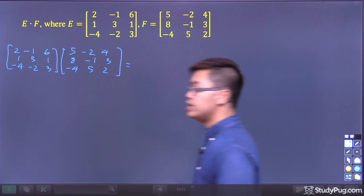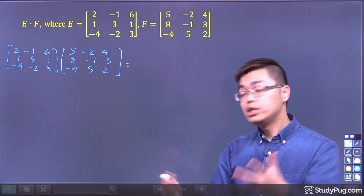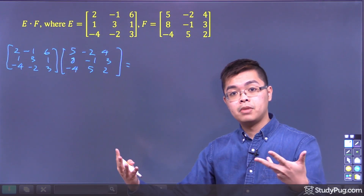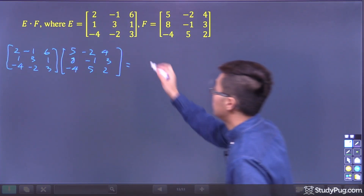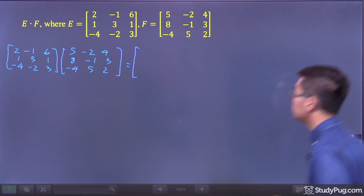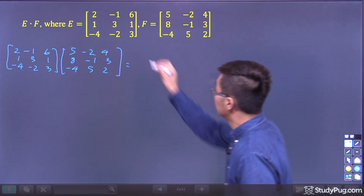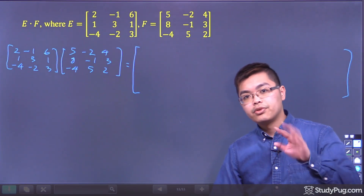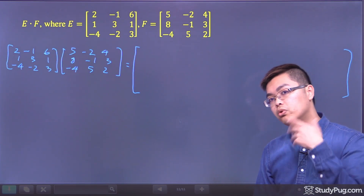We're multiplying these two matrices together. Notice that matrix E is a 3 by 3 and matrix F is also a 3 by 3. So if we multiply those two together, we should get another 3 by 3 matrix — that means it has 3 rows and 3 columns, a total of 9 entries.